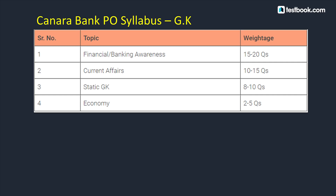Now let's discuss the General Awareness syllabus for Canara Bank PO. For Financial and Banking Awareness, there will be 15-20 questions covering banking and economy, roles and functions of institutions like RBI, NABARD, SIDBI, currencies and countries, international trade, acquisitions and deals, exchange rates, repo rates, and banking-related facts. For Current Affairs, there will be 10-15 questions covering national and international news, books and famous personalities, bank mergers, and important government schemes and policies. You should study current affairs of the past 4 months — August, September, October, and November.